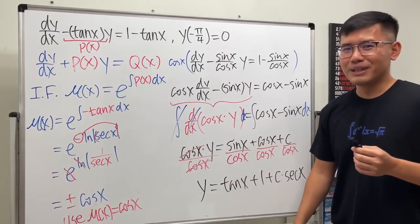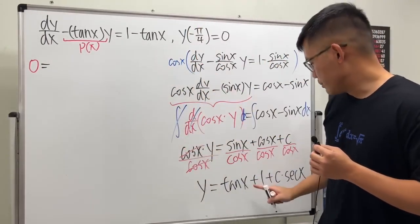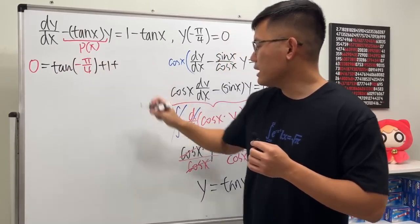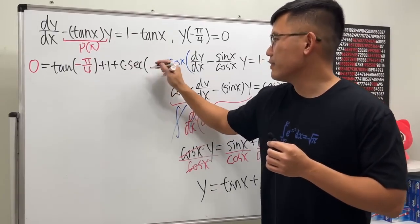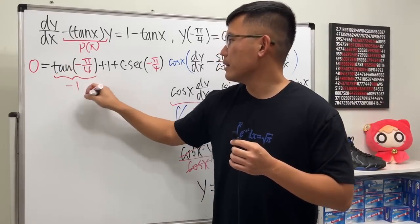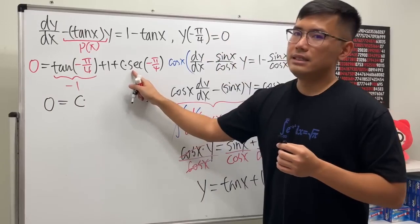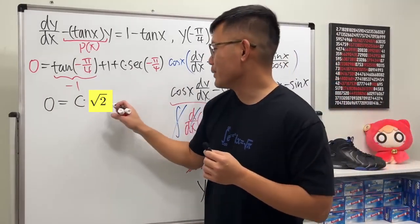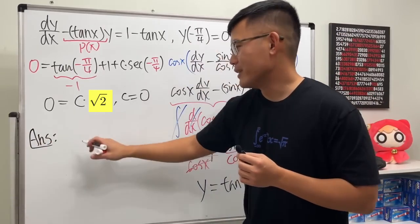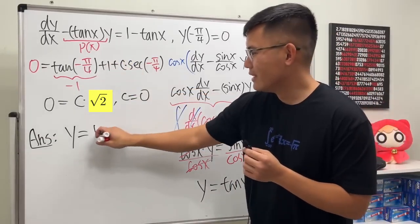Applying the initial condition y equals zero when x equals negative pi over four: tangent of negative pi over four is negative one, and negative one plus one equals zero, so we have zero equals C times secant of negative pi over four. Therefore C must equal zero, and the particular solution is y equals one plus tangent x — the same answer as the other five differential equations in this video!